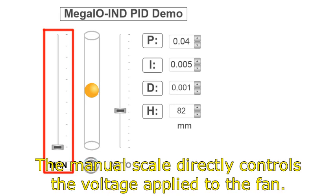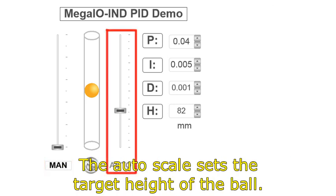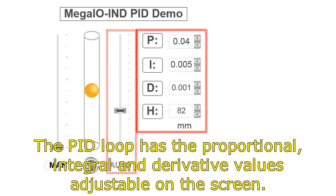The manual scale directly controls the voltage applied to the fan. The auto scale sets the target height of the ball. The PID loop has the proportional, integral, and derivative values adjustable on the screen.